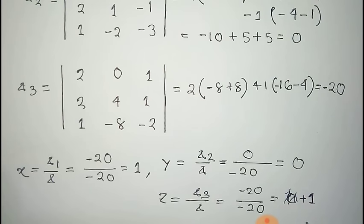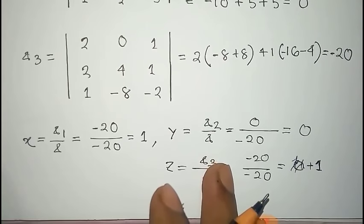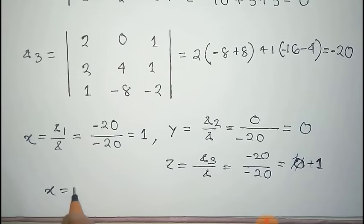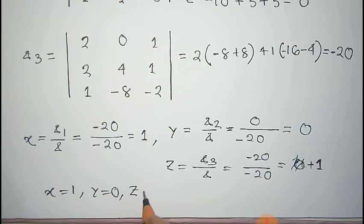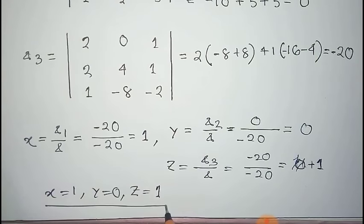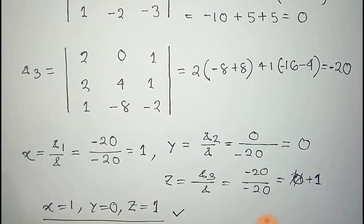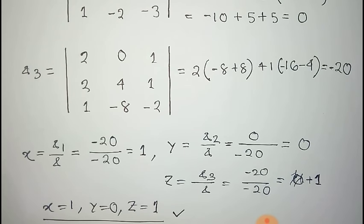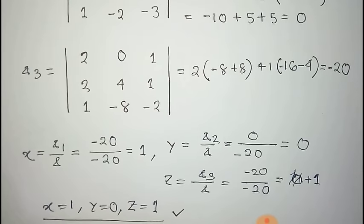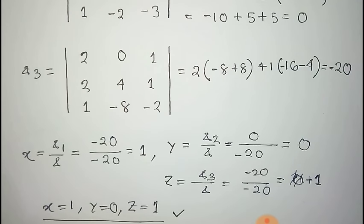Thus we get the values of x, y, and z, and the solution for the equations: x equal to 1, y equal to 0, and z equal to 1. These are the solutions of the three linear equations using Cramer's rule. For any doubt, you can see our video on the theory of Cramer's rule and its application — the link is given in the description. Thank you.